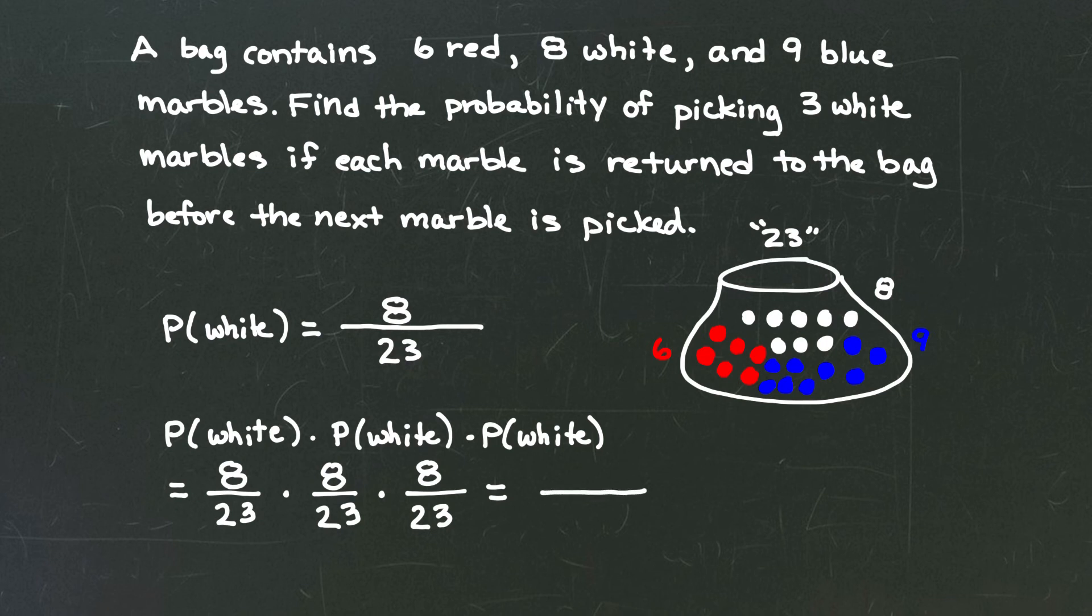When I take eight times eight times eight I get 512 and in the denominator I'm going to take twenty-three times twenty-three times twenty-three or twenty-three to the third power and that's going to give me twelve thousand one hundred and sixty-seven. That is the probability of selecting three white marbles if each marble is returned is 512 divided by 12,167.